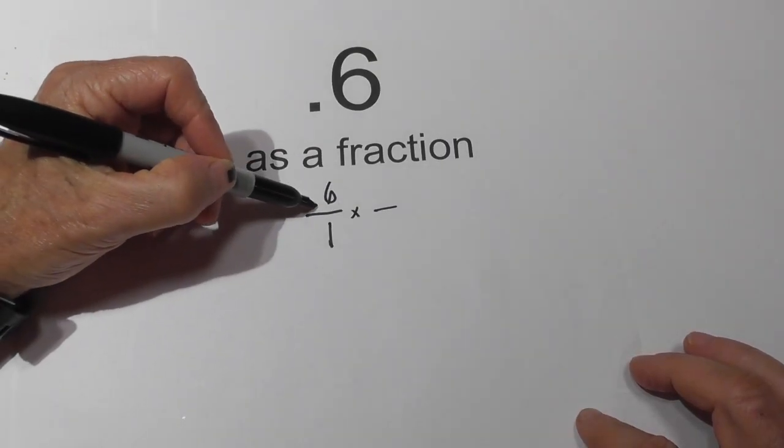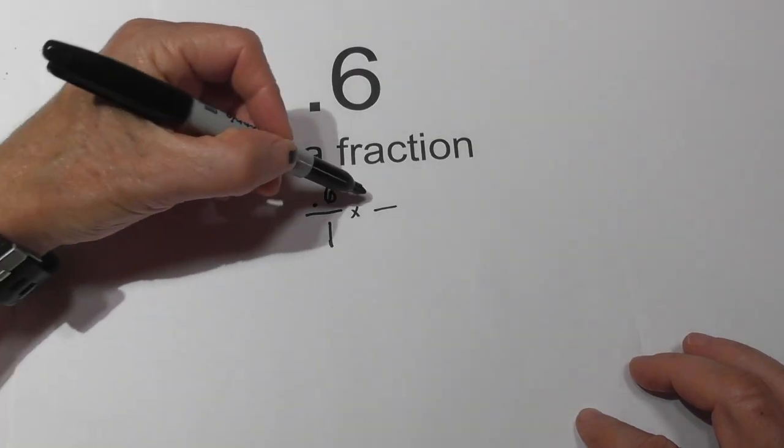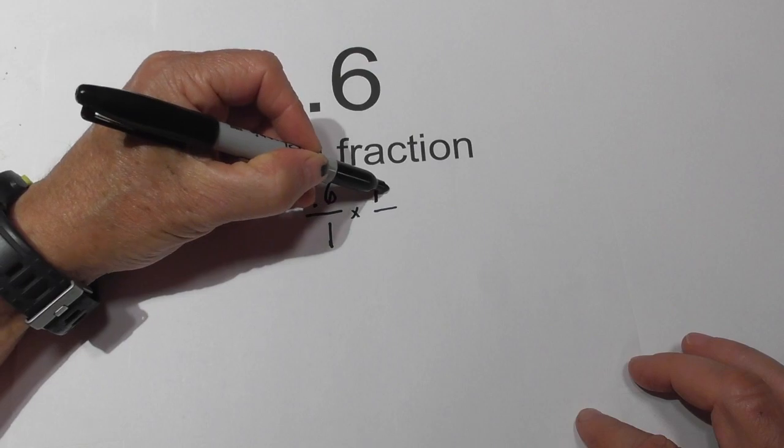First you know that numbers to the right of the decimal go tens, hundreds, thousands. So we're going to need to multiply it by 10.